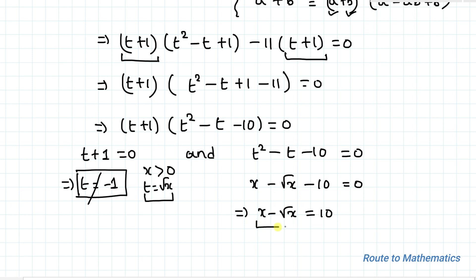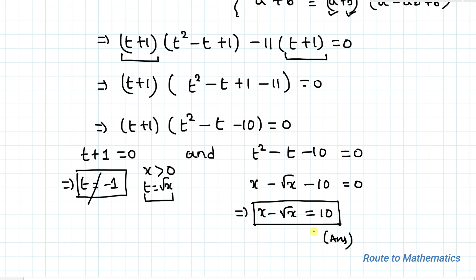We were asked to find the value of x minus √x. Thus the value of x minus √x is equal to 10, which is our answer. I hope you have understood the solution. Thanks for watching — please subscribe to my channel for more such interesting videos. Thank you.